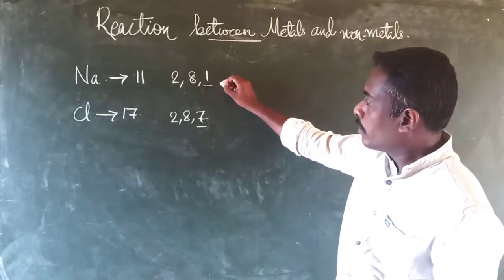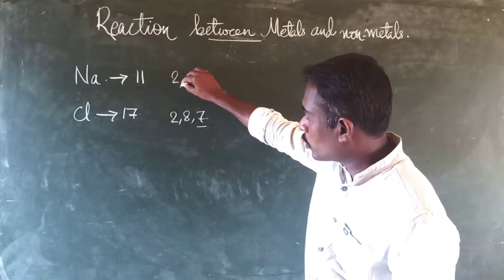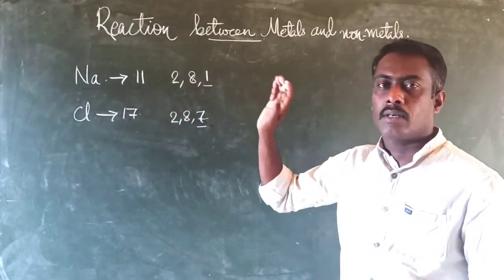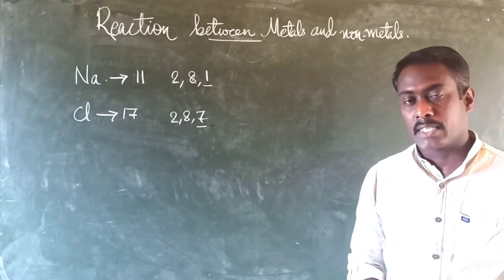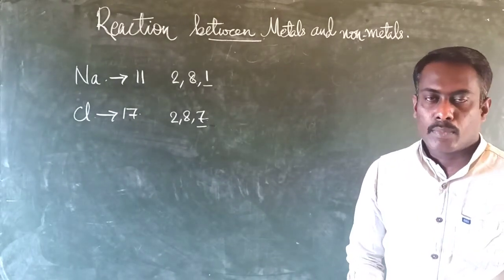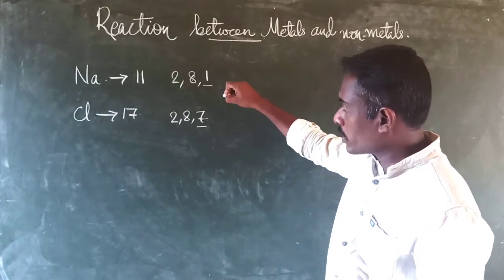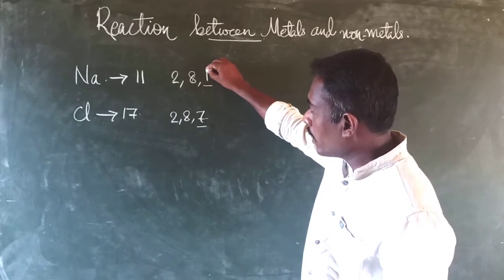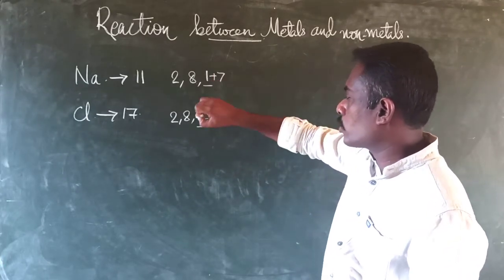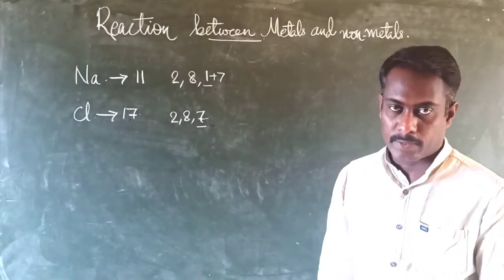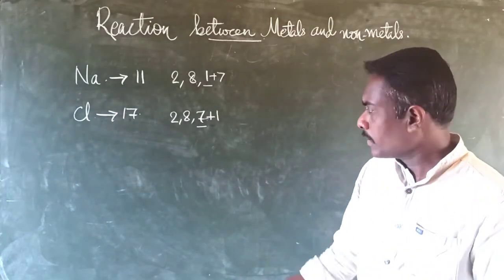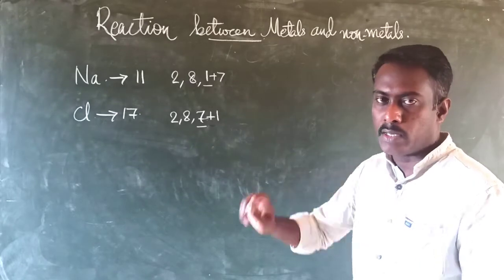For sodium, the first two shells are occupied by the maximum number of electrons, so they are satisfied. But the third shell, the outermost shell of sodium, has only 1 electron. That means 7 more electrons could be accommodated in the outermost shell of sodium. For chlorine, only 1 more electron can be accommodated in the outermost shell, so that both will get a stable configuration.